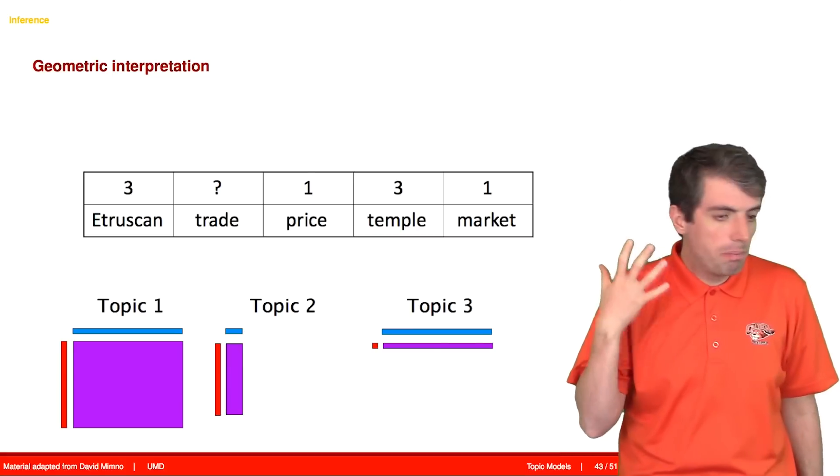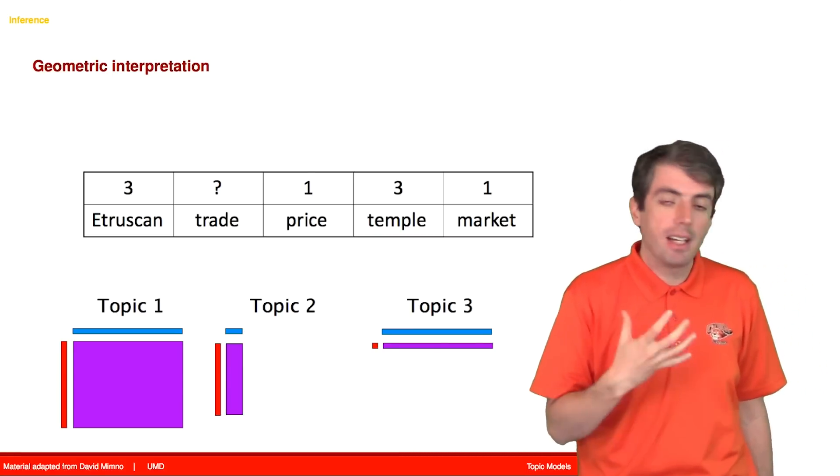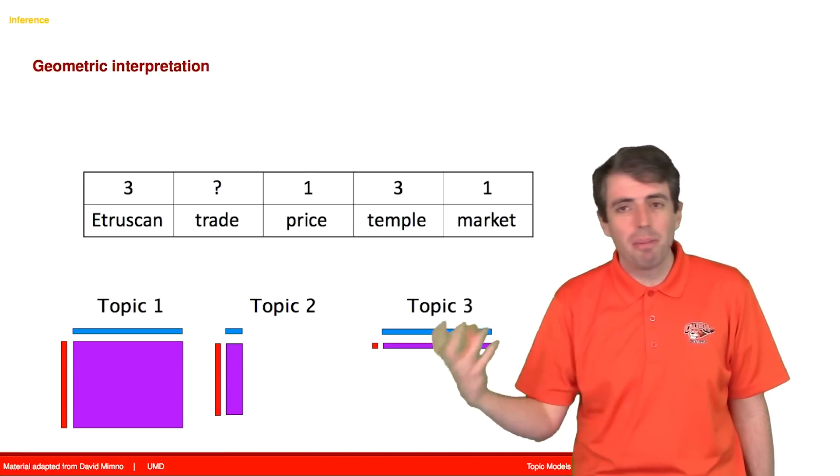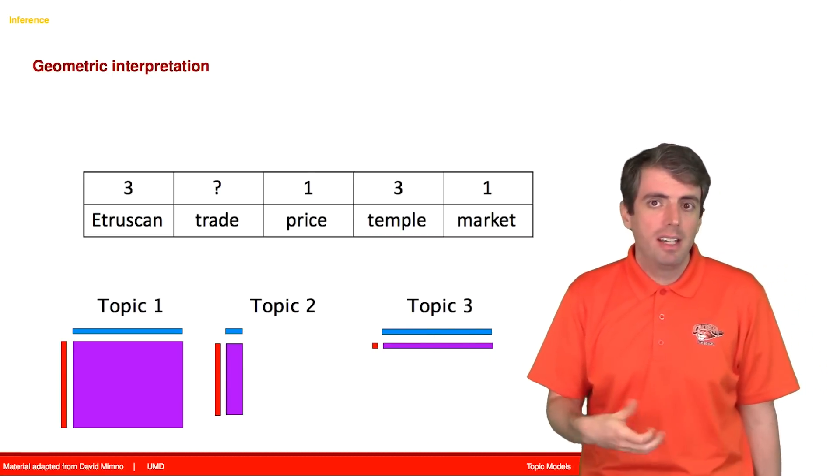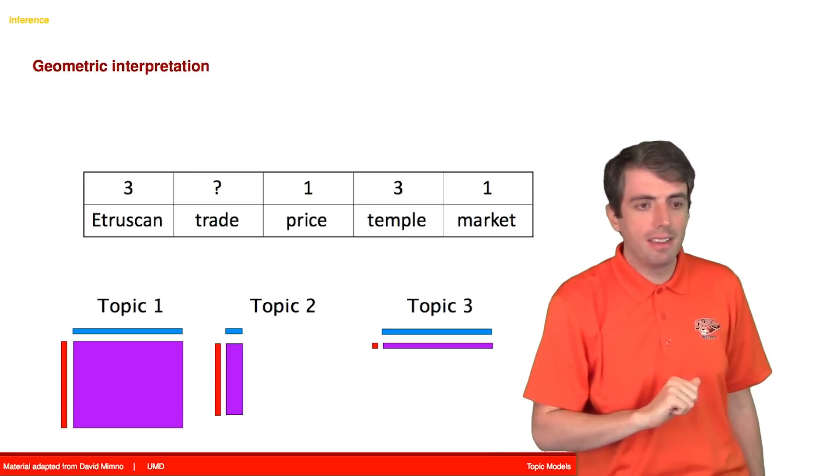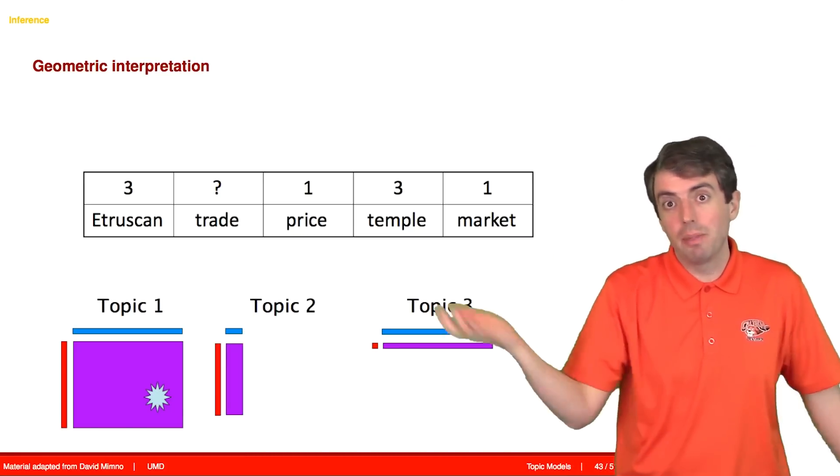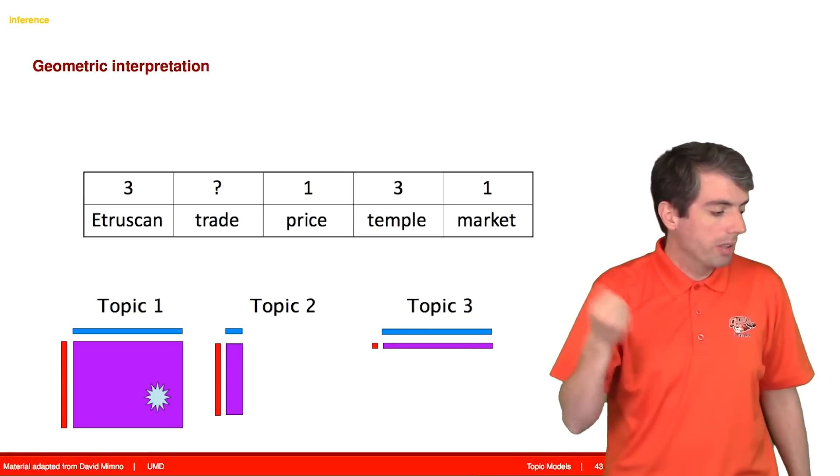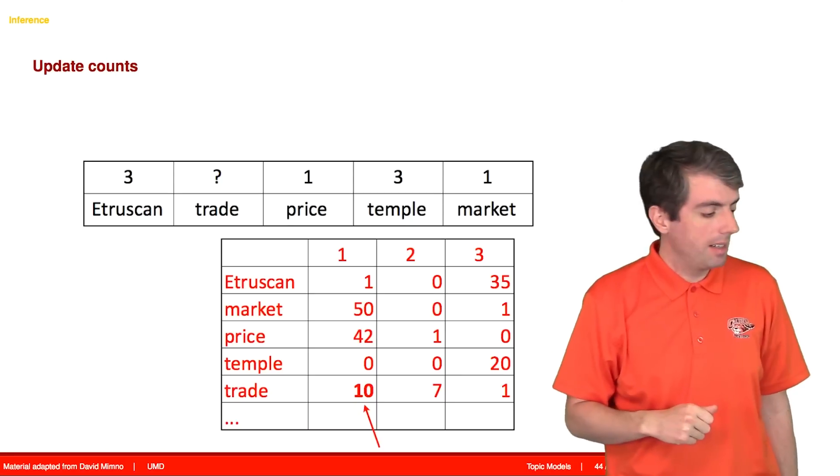And here you can see that we have a big conditional probability for selecting topic 1, and topic 2 and topic 3 really don't have a chance. So we throw a dart at this, and let's say we land in topic 1, which makes the most sense. So now the word trade is going to get assigned to topic 1.